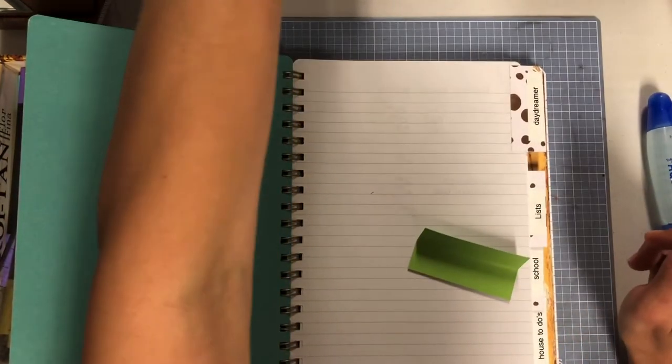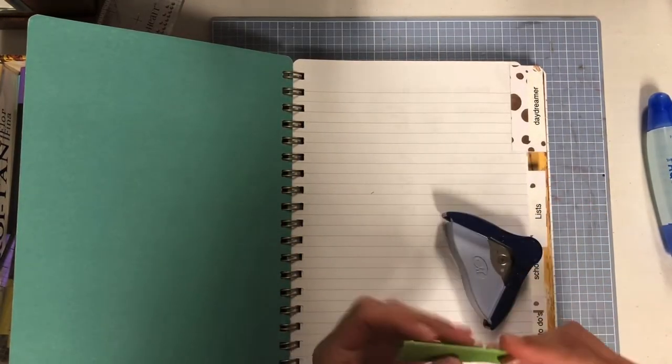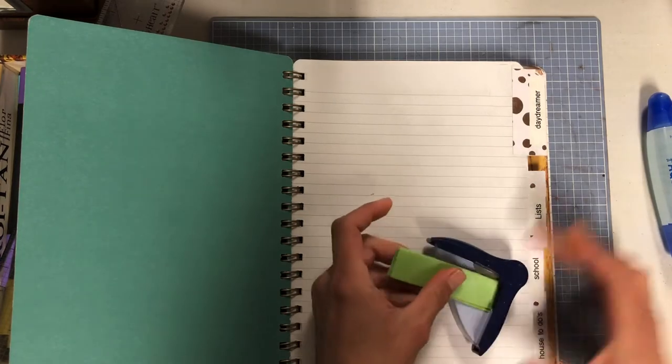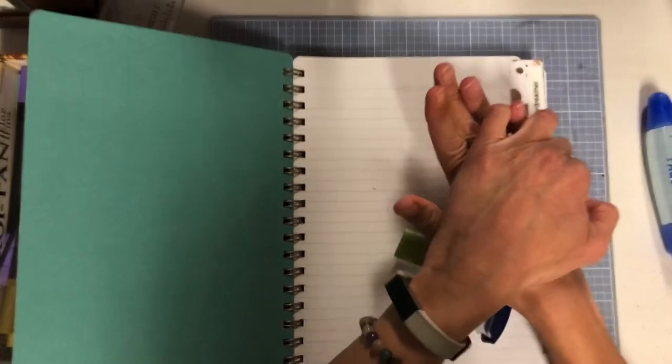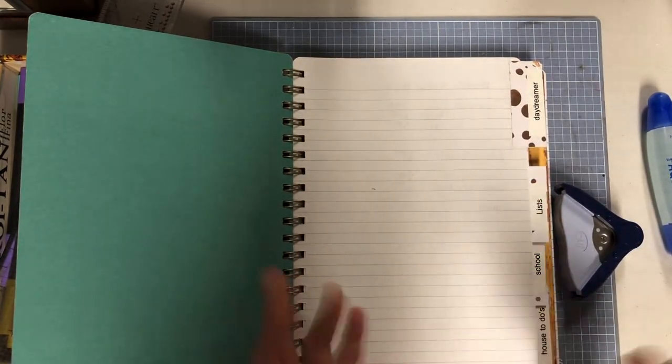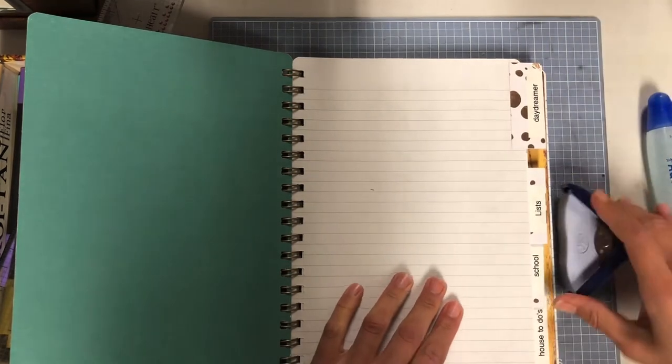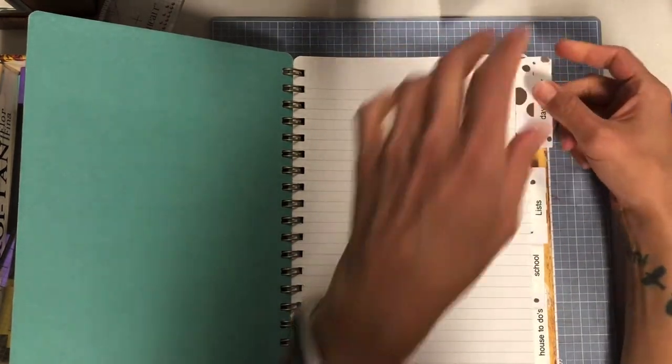You just run a bead of glue down each side, glue on this side, glue on this side, and voila you have a fancy little index. One of the things that I've been doing for my journals when I'm making these tabs is my corner rounder. If you snip the corners it just makes it look a little bit more professional.